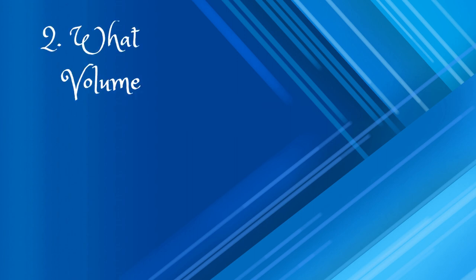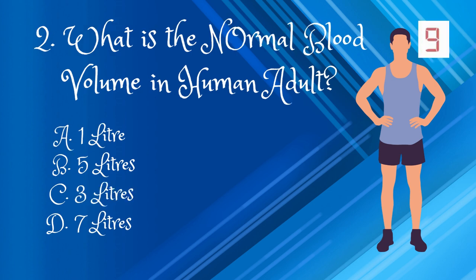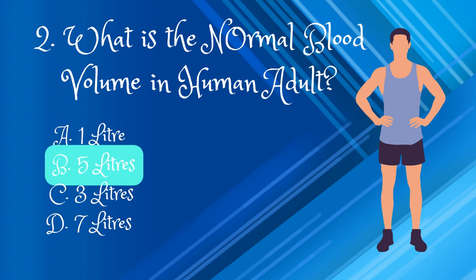What is the normal blood volume in the adult human body? The answer is 5 liters.